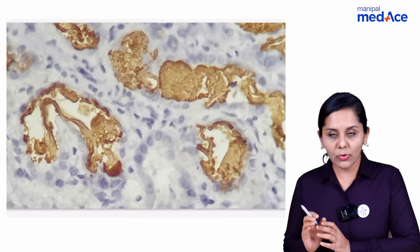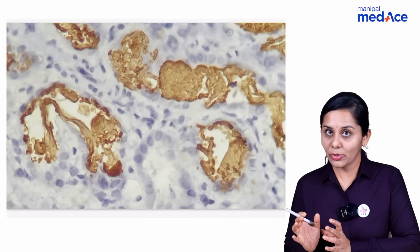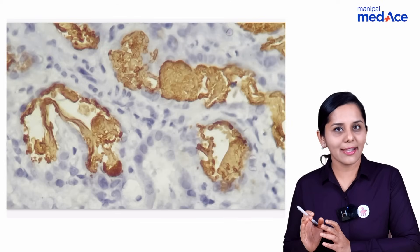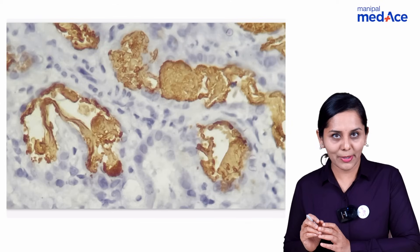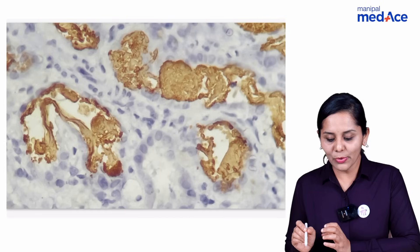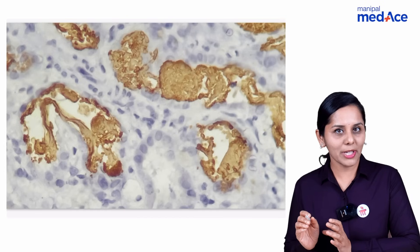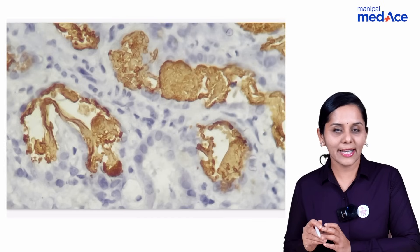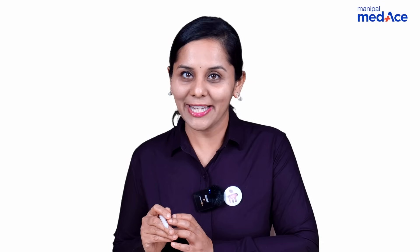In the given question, you saw a brown color on a slide of immunohistochemistry. So what is the chromogen used? You should be able to answer it as DAB. Thank you for your attention.